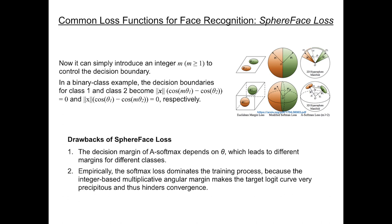The first is due to the integer value of m, which causes the curve of the target logit, i.e. the logit which corresponds to the ground truth label, to be very steep and thus hinder convergence.